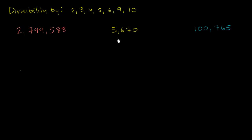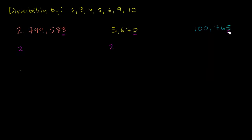To test whether any of these are divisible by 2, you really just have to look at the ones place and see if the ones place is divisible by 2. Here, 8 is divisible by 2, so this number is going to be divisible by 2. 0 is considered to be divisible by 2, so this one is also divisible by 2 — another way to think about it is if you have an even number in the ones place, including 0, you're divisible by 2. Over here, the ones digit is 5, which is not even, so this is not divisible by 2.